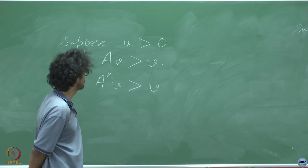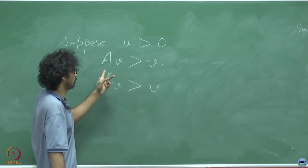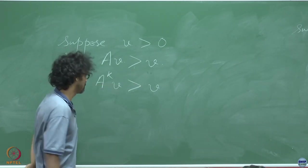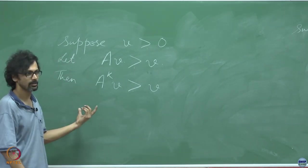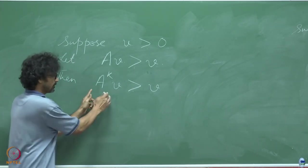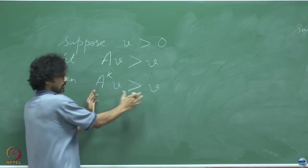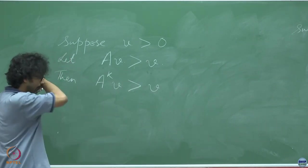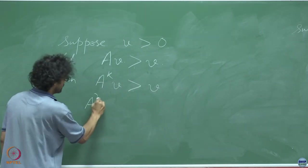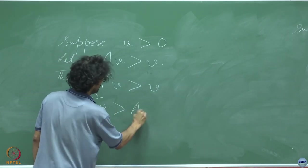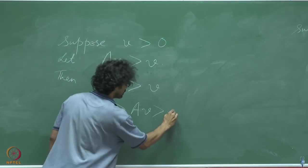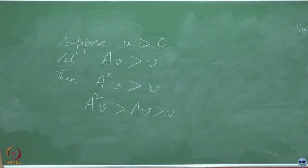To prove this: keep applying A on both sides. Hitting AV > V with A gives A²V > AV; since AV > V, we get A²V > V. More elegantly: A(AV − V) > 0 since AV − V is a positive vector, so A²V − AV is positive; and AV − V is already positive. Hence A²V − V = (A²V − AV) + (AV − V) > 0.